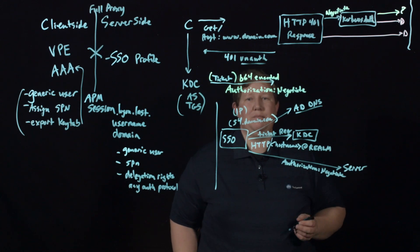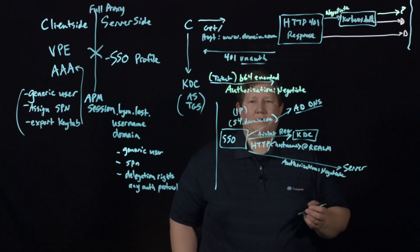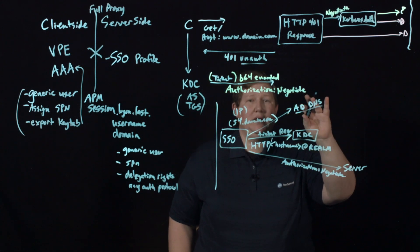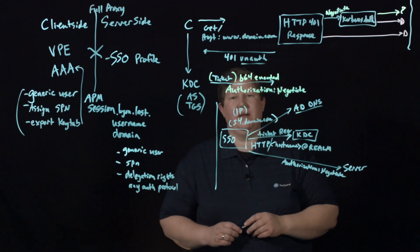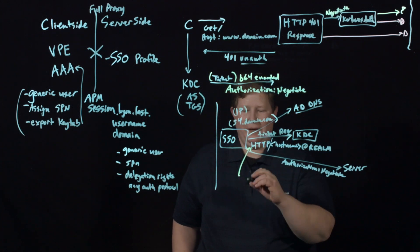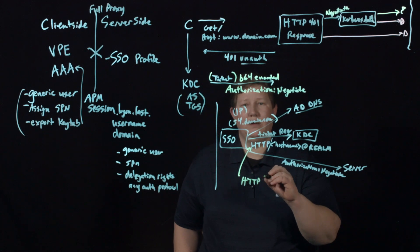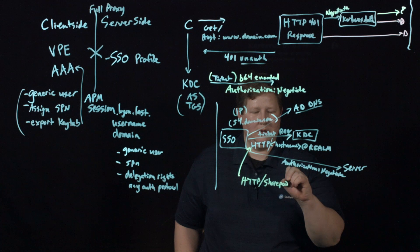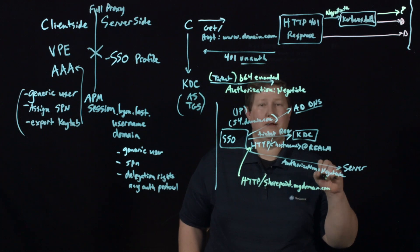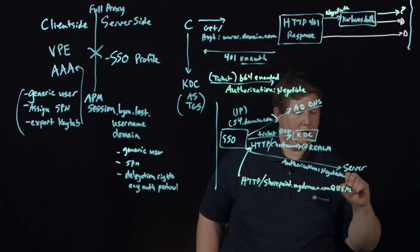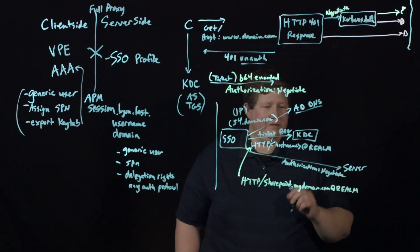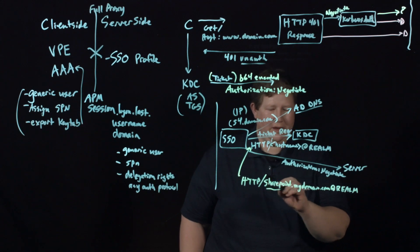Domain account-based access is far simpler — it does not need to do a DNS lookup at all because it's service-based. It skips the DNS lookup, and the ticket request goes straight to the KDC. Instead of a host lookup, we substitute the request as HTTP/sharepoint.mydomain.com@realm. That goes straight to the KDC, skipping the first lookup step, then the same authorization negotiate response goes back to the service.